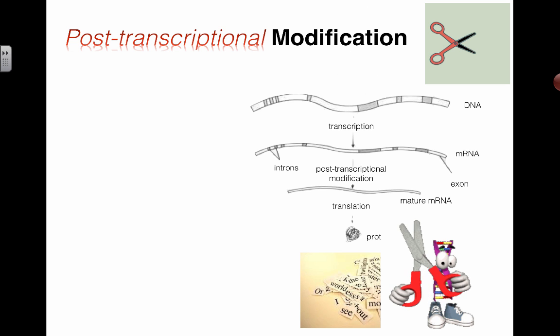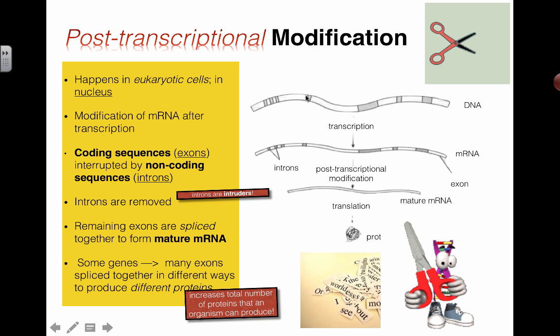So let's see what else we have added here that we can take a look at. I mentioned only happens in eukaryotic cells in the nucleus before the mRNA actually goes out. The coding sequences called exons are interrupted by non-coding sequences or intruders called introns. The introns are removed. The remaining exons are spliced together.